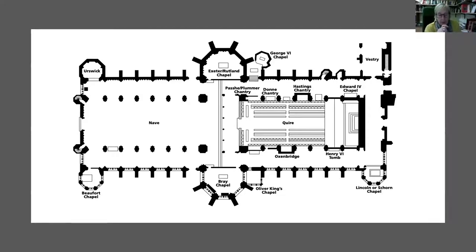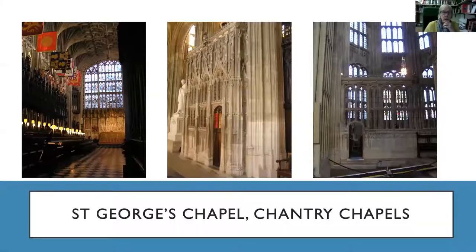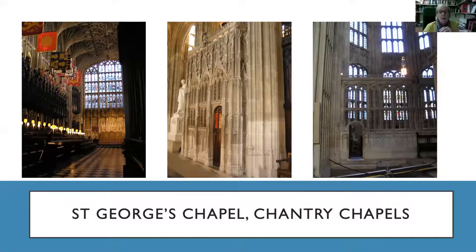Interestingly, in the foundation document for Anne's chantry, founded in 1481, it clearly states that halfway through the mass — which was in Latin — the priest had to turn around to any congregation and say in English 'this chantry mass is celebrated for Anne, Duchess of Exeter', then turn around and carry on in Latin. This tells us there was a real impetus to encourage people to remember in their prayers the person the mass was being celebrated for.